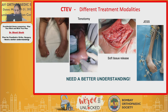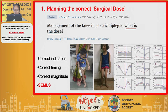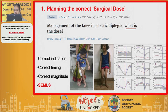The first principle is planning the correct surgical dose. This concept is well documented for surgeries of neuromuscular conditions like cerebral palsy. Children with various degrees of spasticity, soft tissue contractures, and bony deformities need thorough clinical evaluation supplemented with three-dimensional gait analysis to plan the correct indication, timing, and magnitude of surgery in the form of single event multi-level surgery.